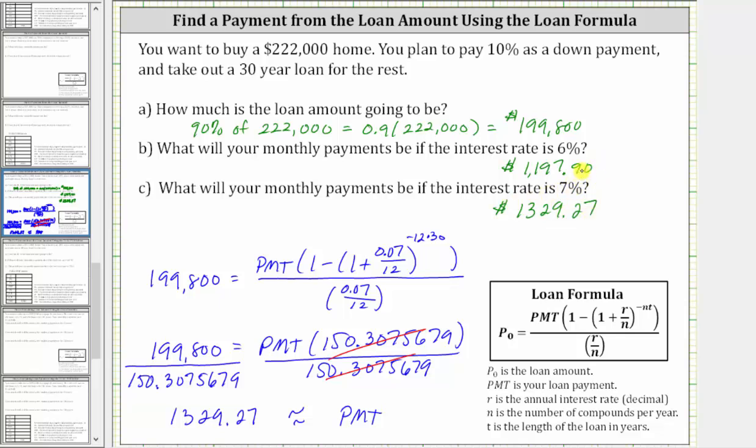Looking at the monthly payments, notice how the monthly payment goes up by over $130 when the interest rate goes from six percent to seven percent, which is why the interest rate of a mortgage loan is so important. I hope you found this helpful.